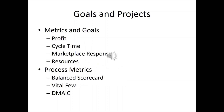Metrics and goals — profit is all about money. Cycle time: how fast can you get it out, and how does the marketplace respond? What kind of resources are going to be needed? And you've got a balanced scorecard — you've got to do your process metrics, and analyze, improve, and control.